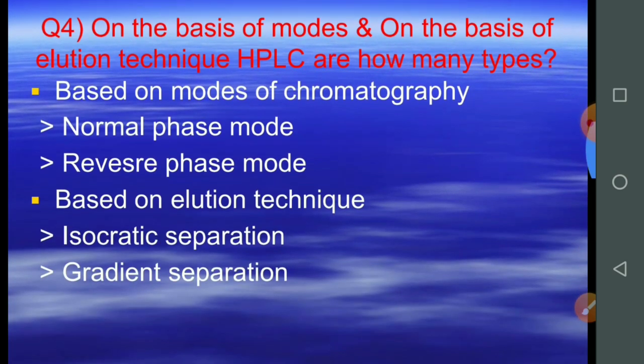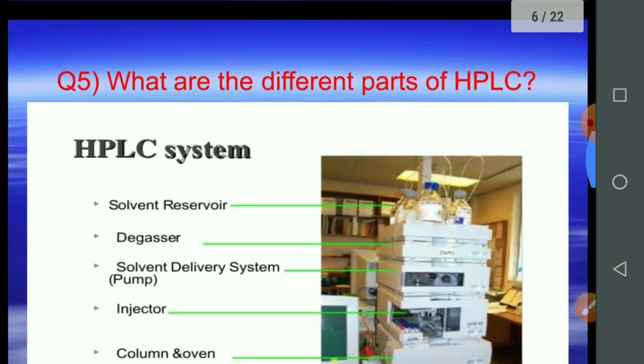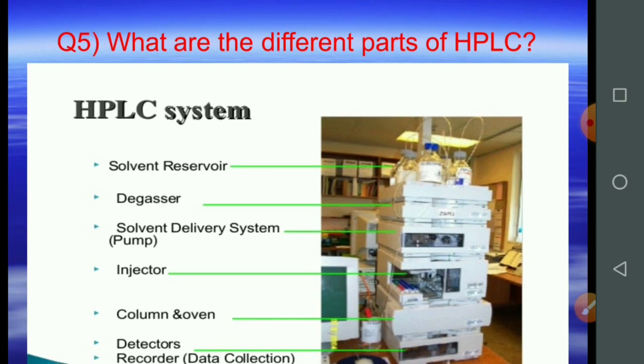Question number four: how many types of HPLC are there based on modes and elution techniques? Based on modes of chromatography, it is divided into two types: number one, normal phase mode, and number two, reverse phase mode. On the basis of elution technique, it is also divided into two: number one, isocratic elution, and number two, gradient elution.